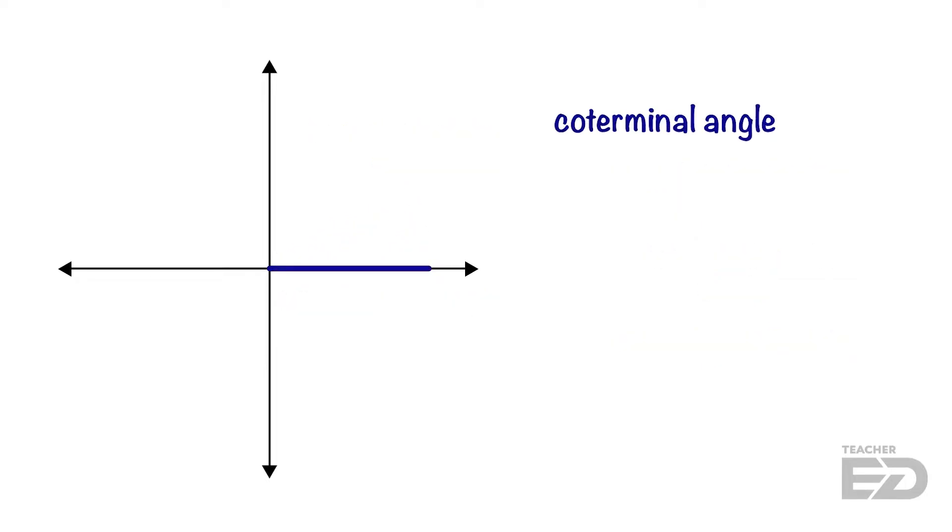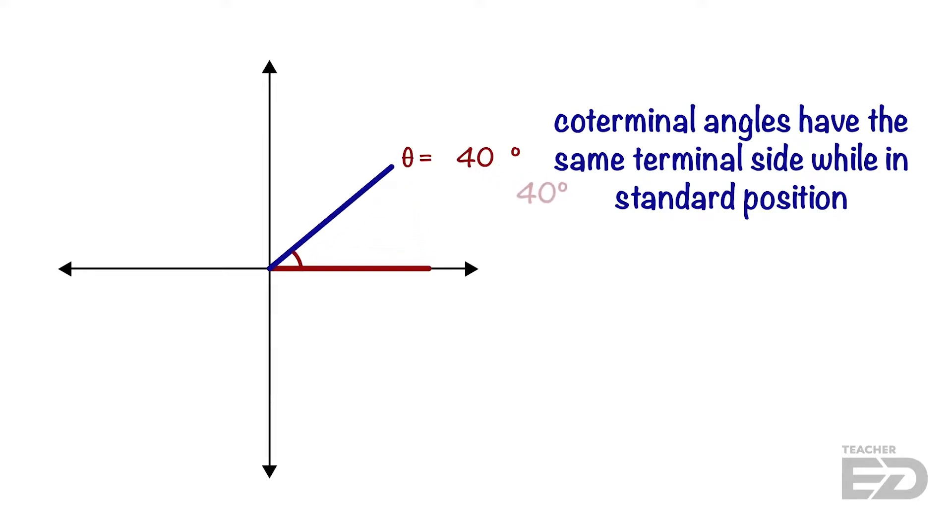Coterminal angles are angles that share a terminal side. For example, 40 degrees, 400 degrees, and 760 degrees are all coterminal. We can also have negative coterminal angles such as negative 320 degrees and negative 680 degrees.